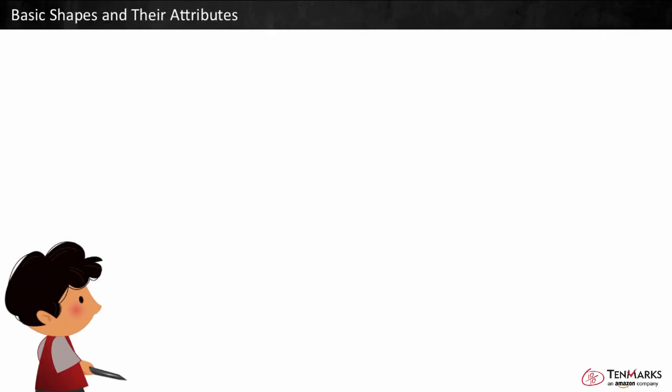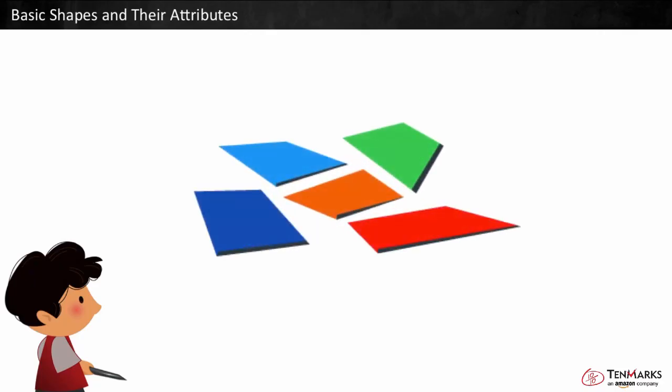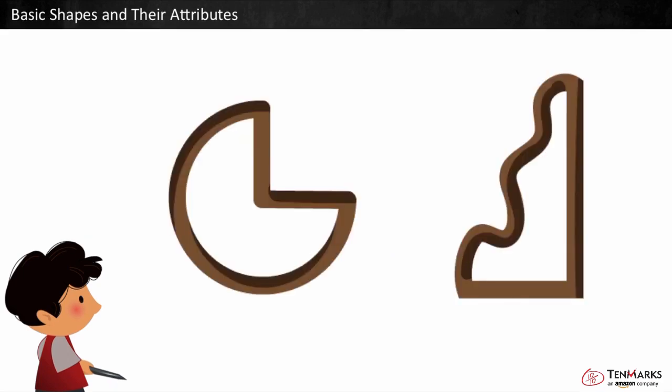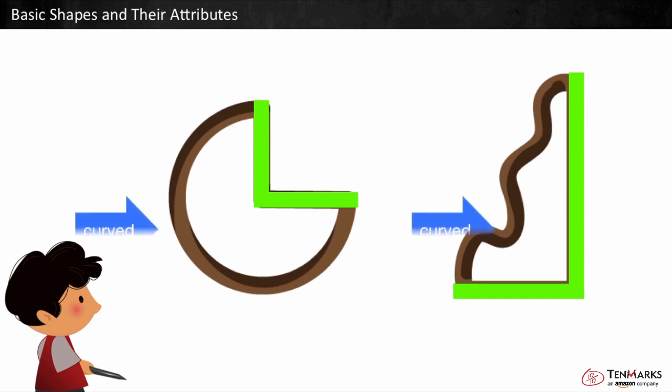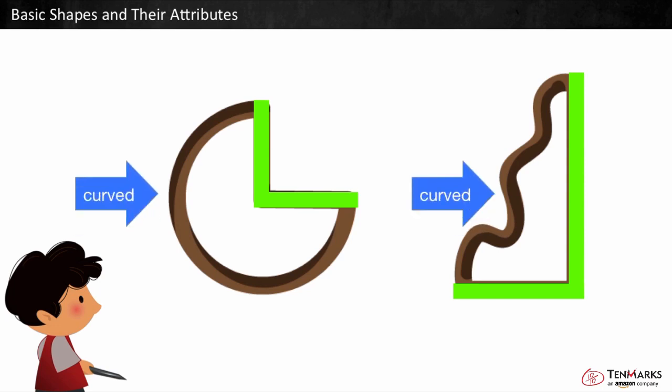Let's look at shapes and their attributes. Shapes can have multiple sides. Some are straight and some are curved. These sides are straight and these sides are curved.